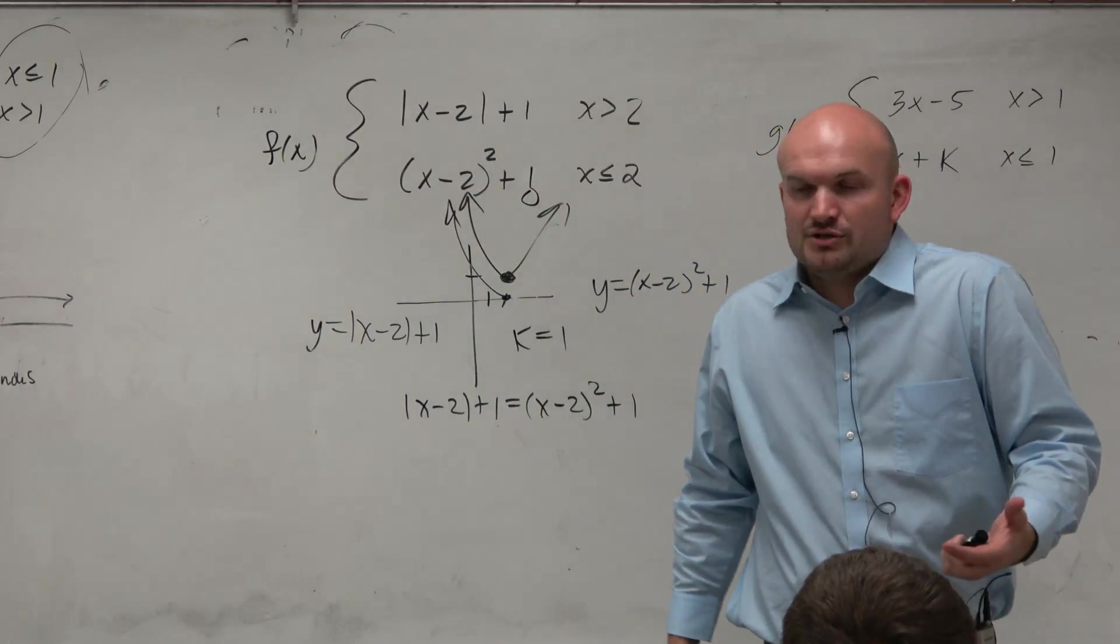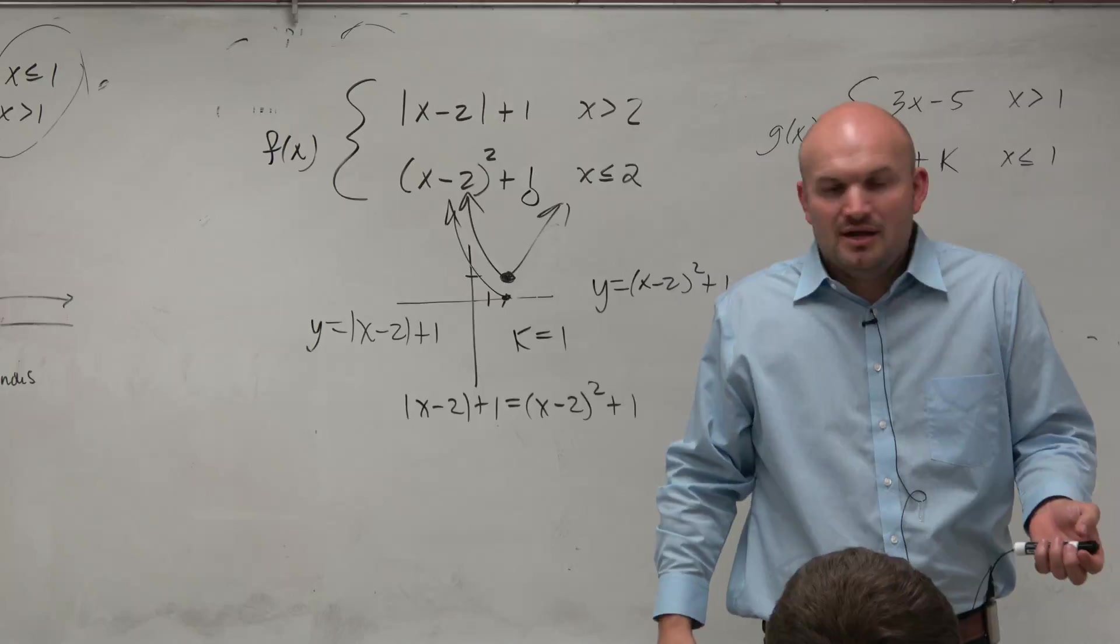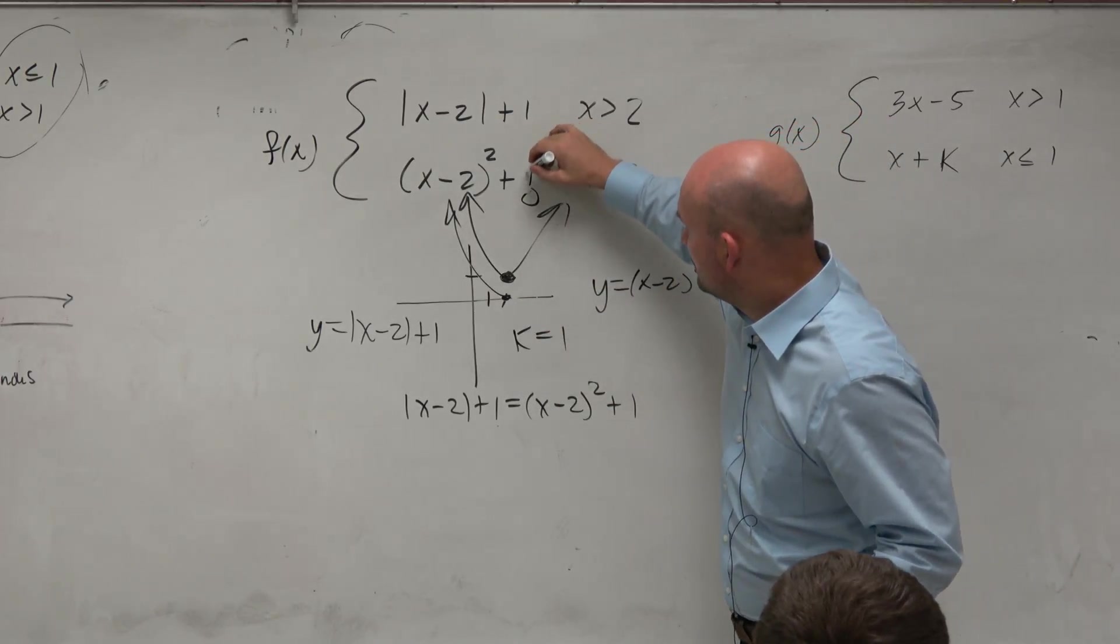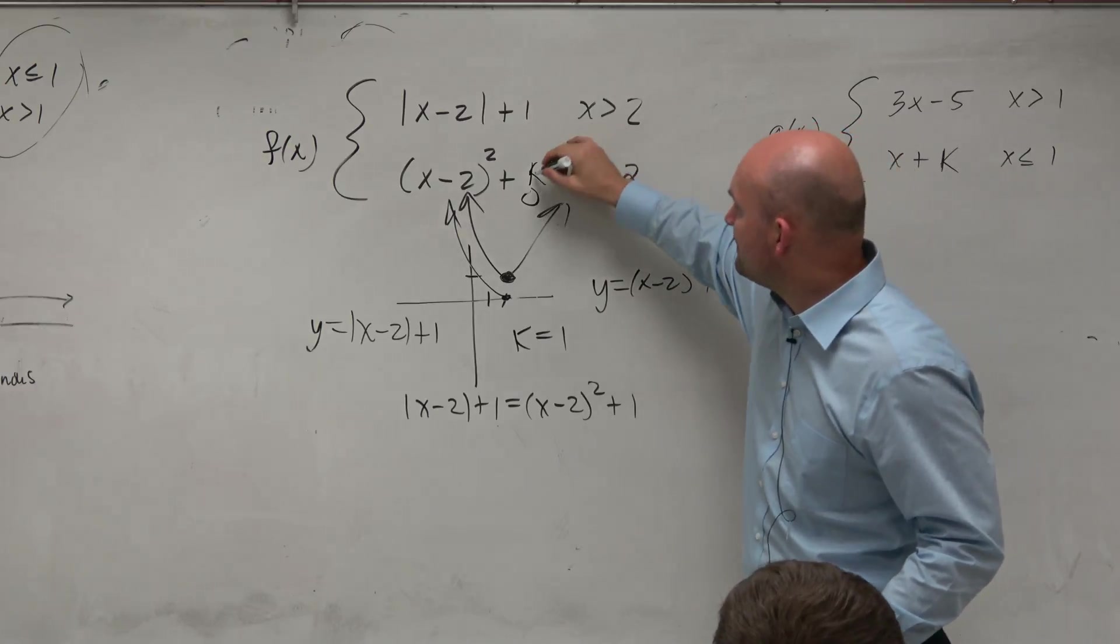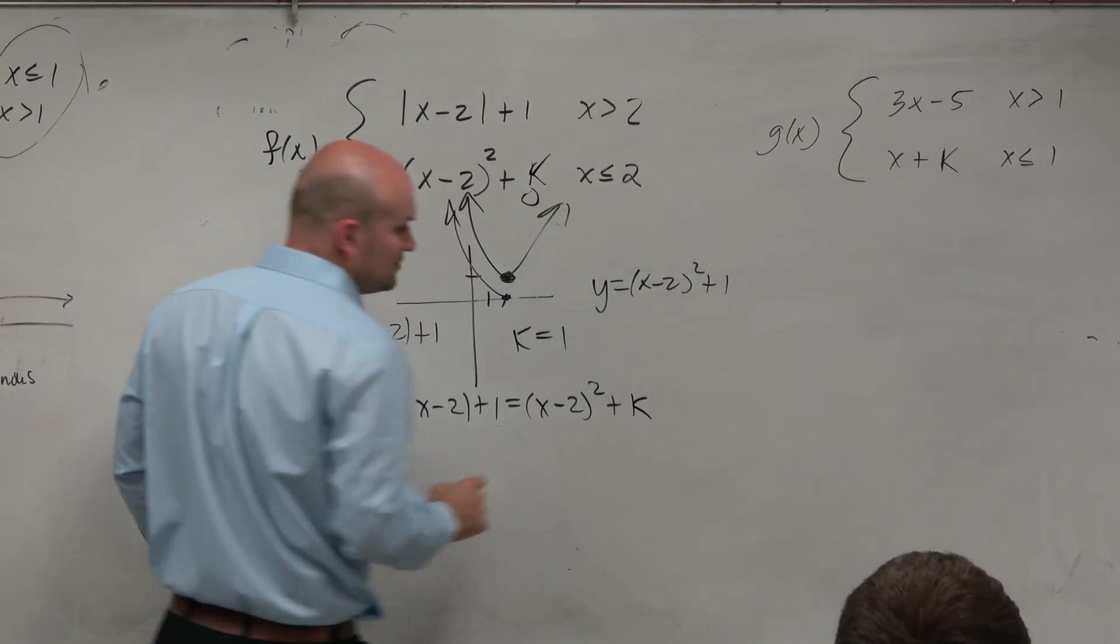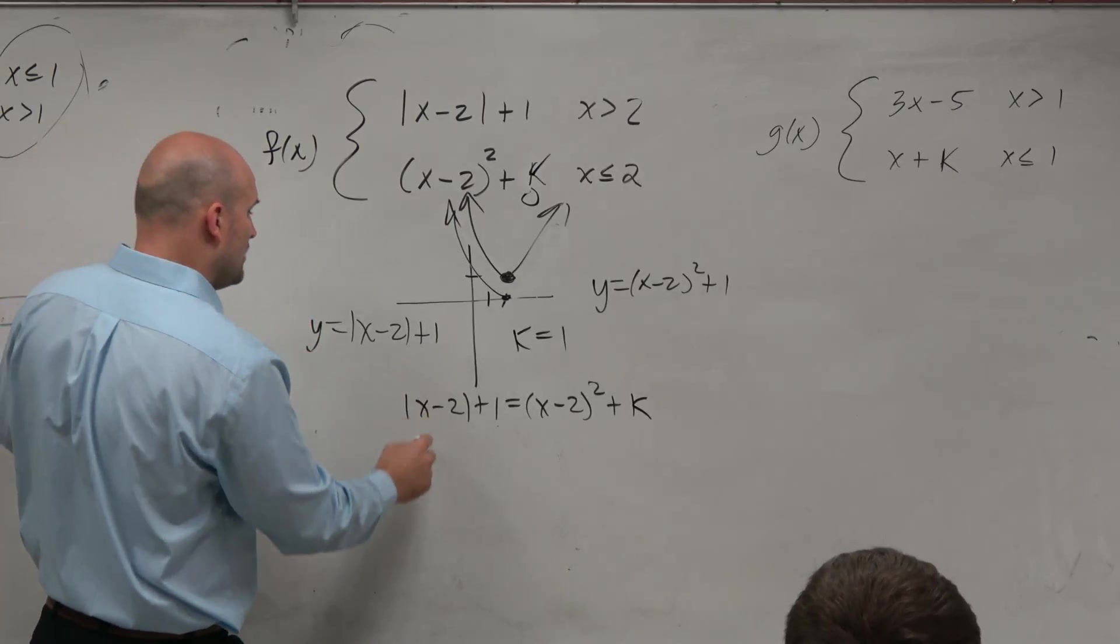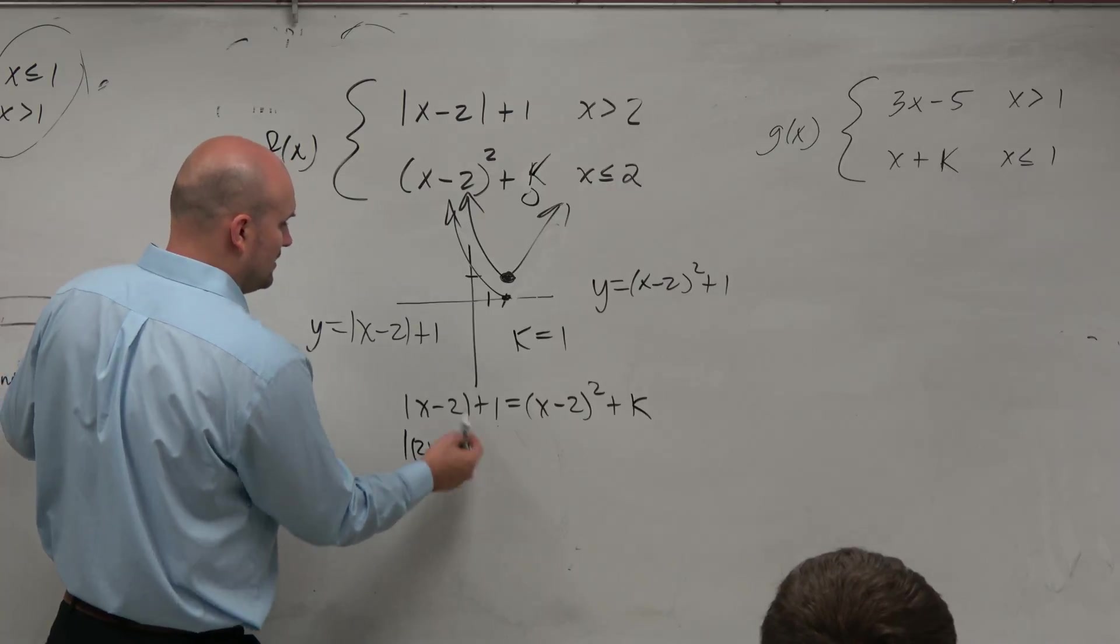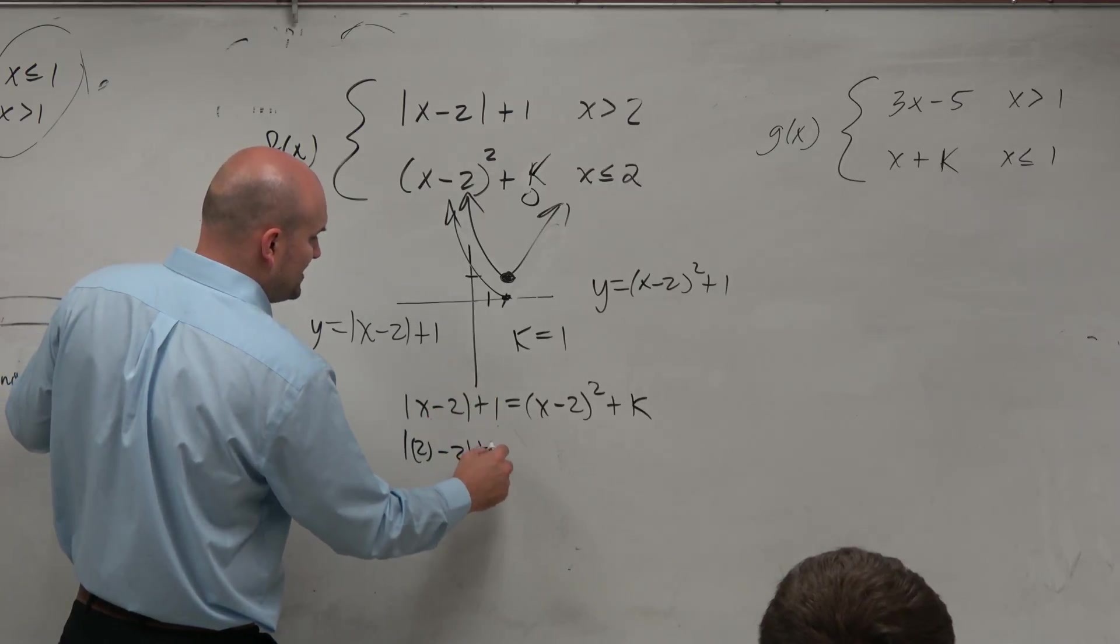And then we don't want to find when the x values are equal. We want to find out, where is this? That's a k. We want to find what is the value k when x is equal to 2, where they're exactly the same. So now we just replace the x with the x value, where they're going to be continuous.